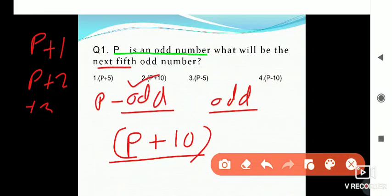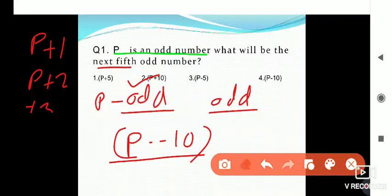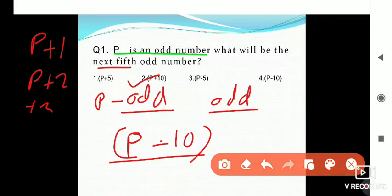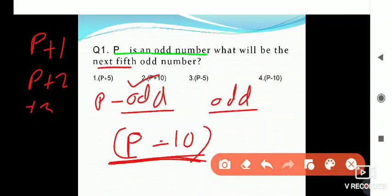If they are asking the 5th odd number previous to P, then we do subtraction because we are finding a previous number: P minus 10. For next numbers we do addition, for previous numbers we do subtraction.